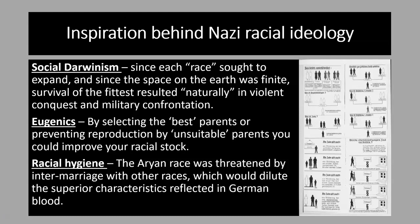A lot of Hitler's racial ideas were based on pseudoscience. The first of these is social Darwinism, where scientists took the ideas of Charles Darwin — who explained that species changed over time through evolution — and applied those ideas to races.